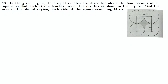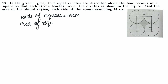All four circles are equal. We take the square area and subtract the area of the circle portions inside it. The side of the square is 14 cm. Area of square equals side × side equals 14 × 14 equals 196 cm². Now, the radius of each circle: since the side is 14 cm and the two circles touch, the radius is 7 cm.